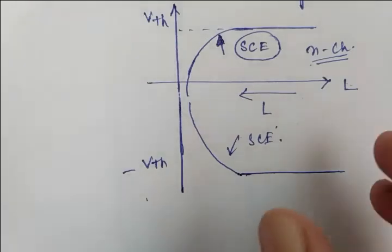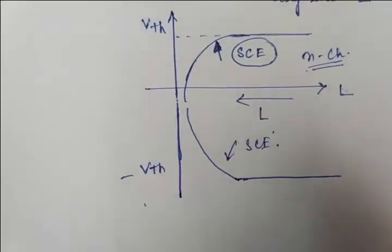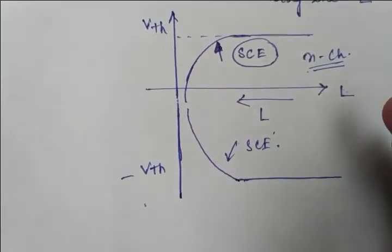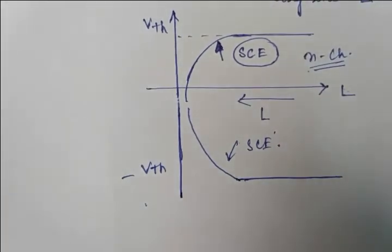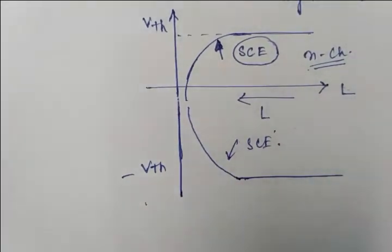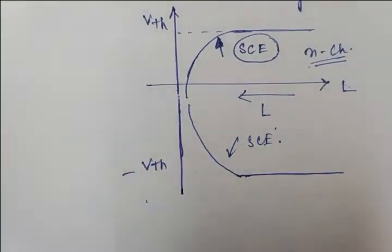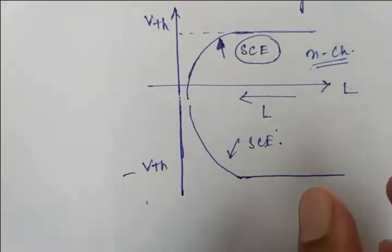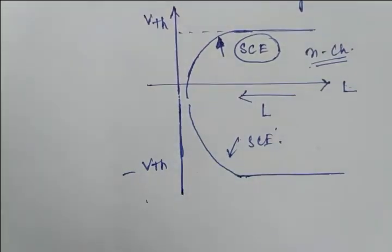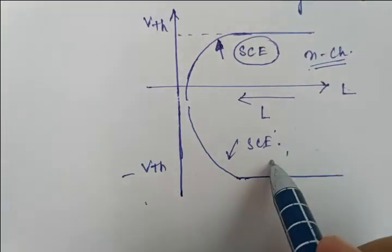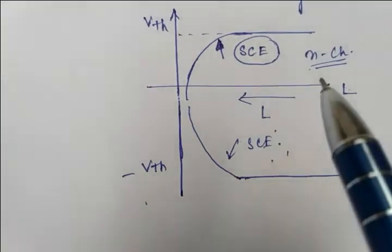This is a very large problem. At 100 nanometers it is already at sub-micron level, but going further to nanometer dimensions makes it a big problem. We need to understand why Vth rolls off, and to understand that we need to look at a diagram.